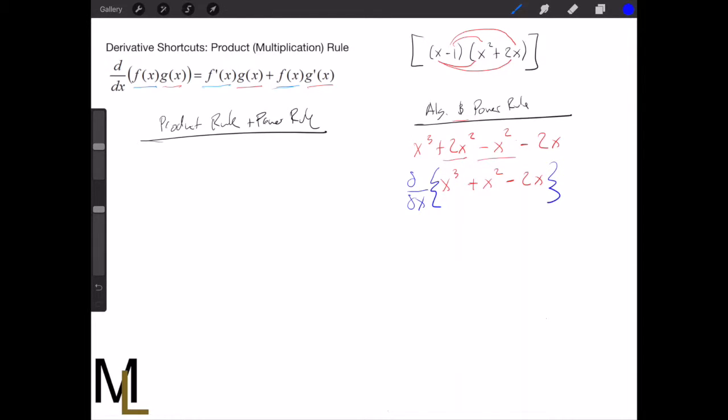We take the derivative of this; all we have to do is use the power rule on each individual segment. We can take the derivative of each individually. So I'll get 3x² by power rule for this part. This becomes +2x. This becomes -2.